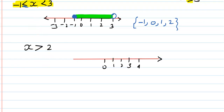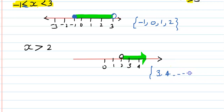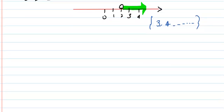x greater than 2 — so we mark 2 with a white circle, and since greater than 2 means we are going this side, all these points will be your answer. Or if you need to write down the solution set: 2 is excluded, so just don't count it — then 3, 4, and so on.